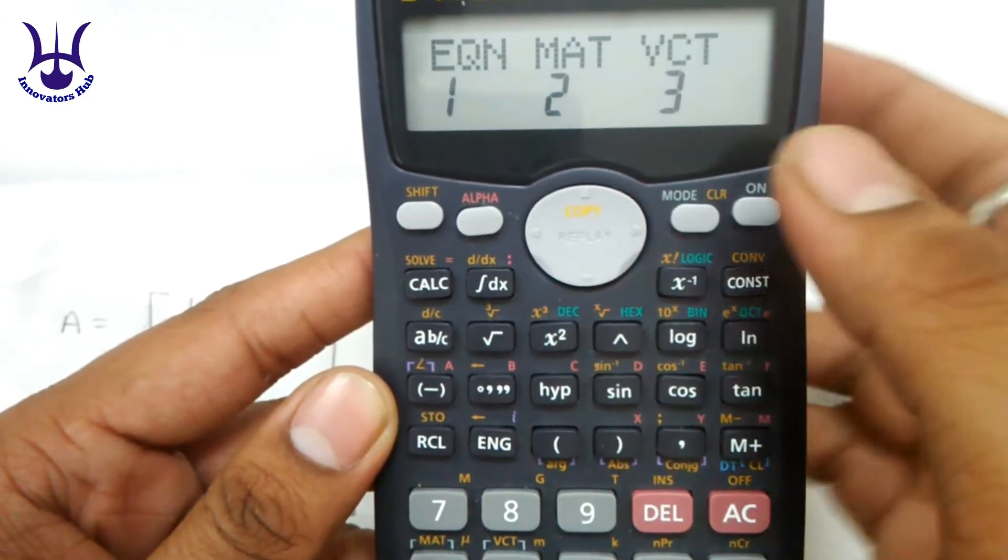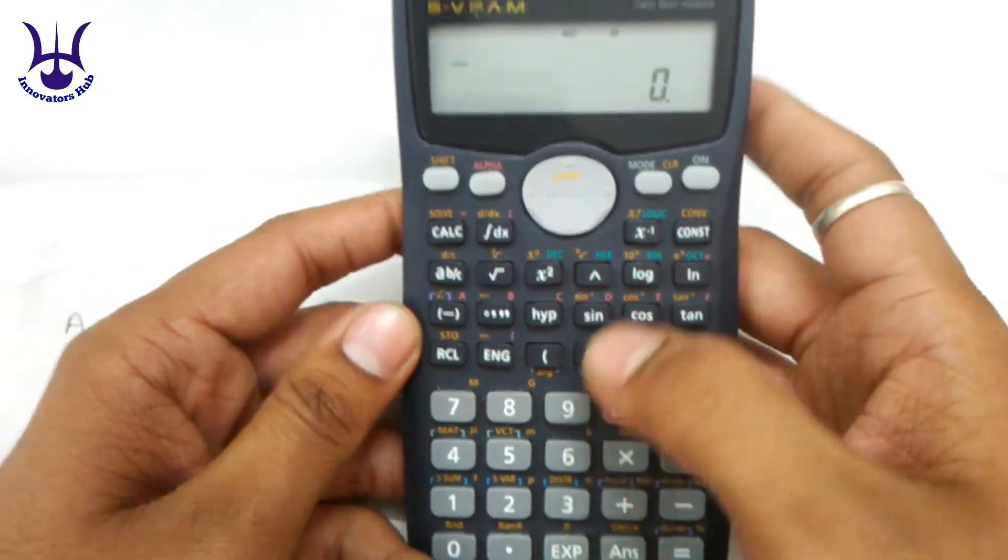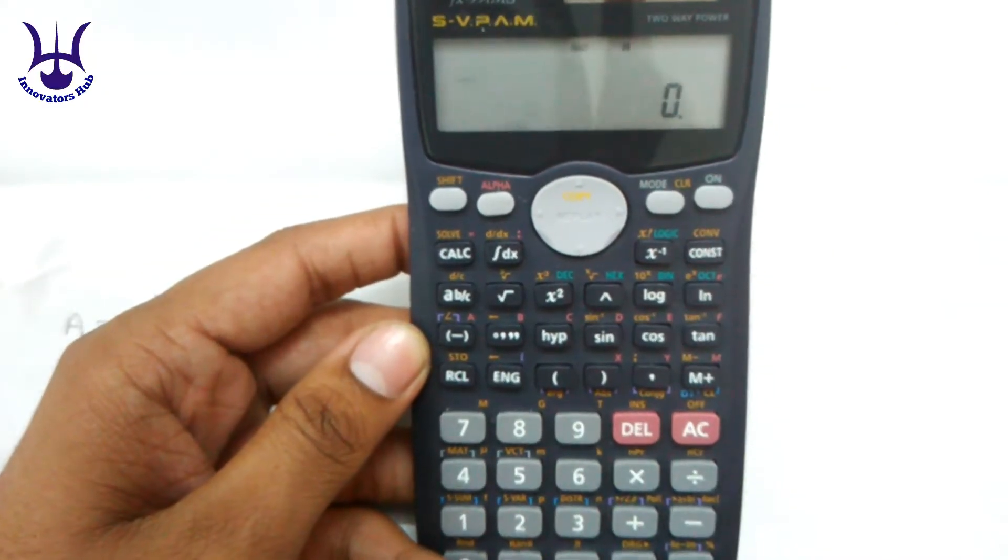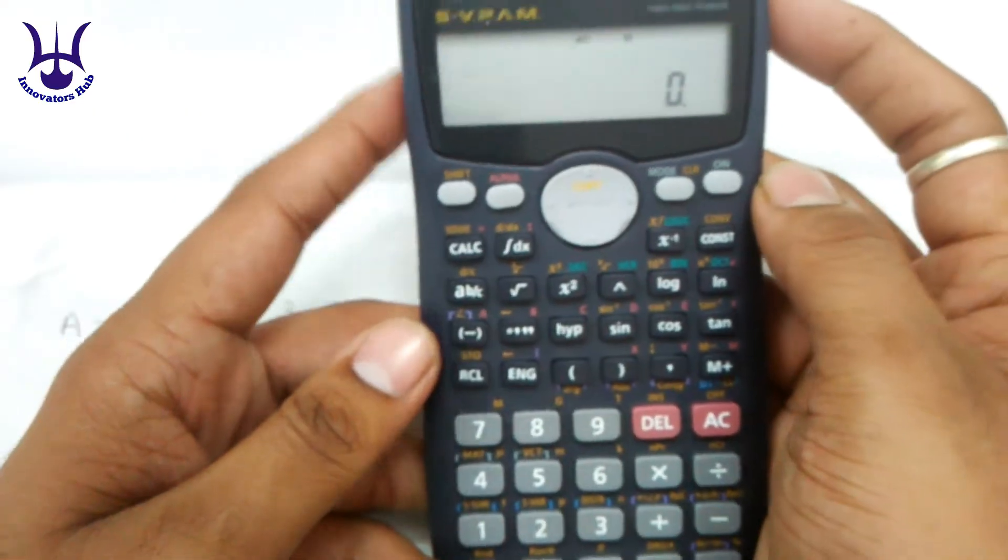Press the mode button three times. Here MAT stands for matrix so we have to select 2. Now we have selected the mode of matrix.